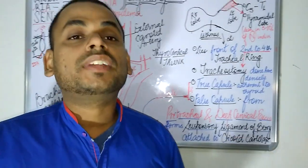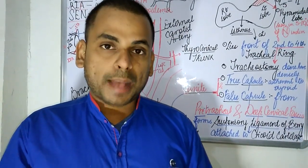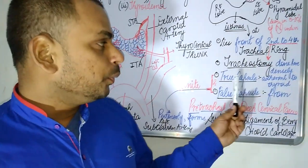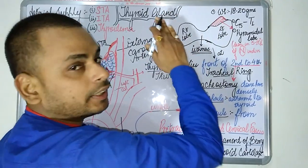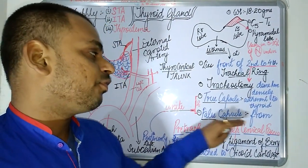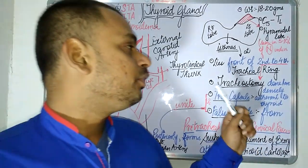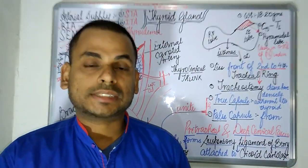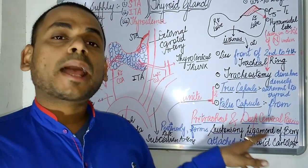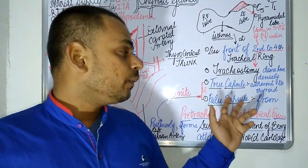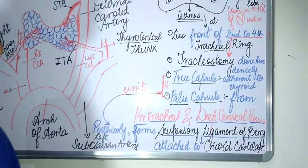The thyroid gland is surrounded by two capsules — the true capsule and the false capsule. The true capsule is closely adherent to the thyroid gland, while the false capsule is formed from the pre-tracheal fascia and the deep cervical fascia.